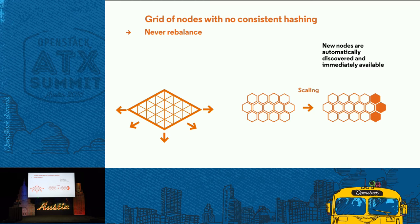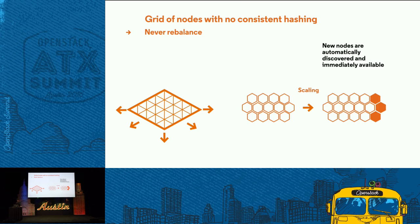This is what makes OpenIO different from Swift or Ceph. They usually rely on consistent hashing techniques or some variation. The idea with OpenIO is that you should not rebalance data when you grow the cluster — it's not good in production because you waste time moving data around and can't use new hardware immediately. When you add new nodes they are automatically discovered and immediately available. There's no static data placement, no ring or anything like that, so it's easier to manage and to scale.